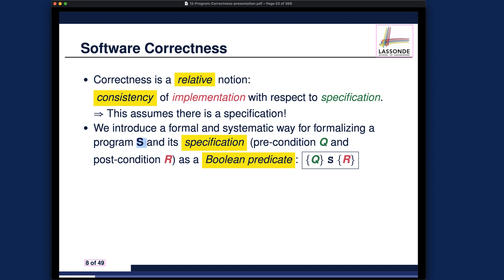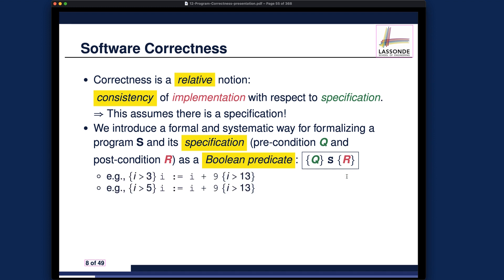Think about the implementation part as S, and then we have a specification including precondition Q and postcondition R. This is the syntax you will have to get used to: curly brackets enclosing the precondition first, then the implementation, then the postcondition. The two motivating examples we spoke about can be formulated using the so-called Hoare triple.